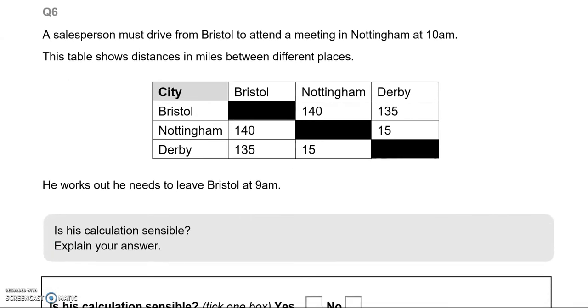Question 6. A salesperson must drive from Bristol to attend a meeting in Nottingham at 10am. This table shows distance in miles between different places. He works out he needs to leave Bristol at 9am. Is his calculation sensible? Looking at the table, which shows the distances in miles between the different places, we can see that the distance between Bristol and Nottingham is 140 miles.